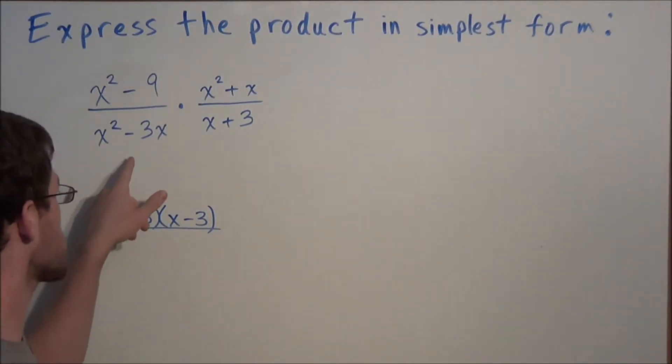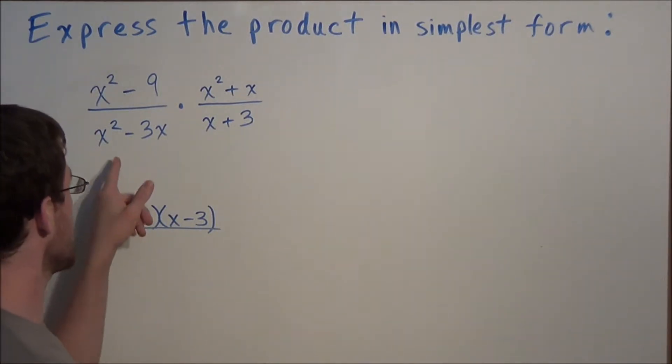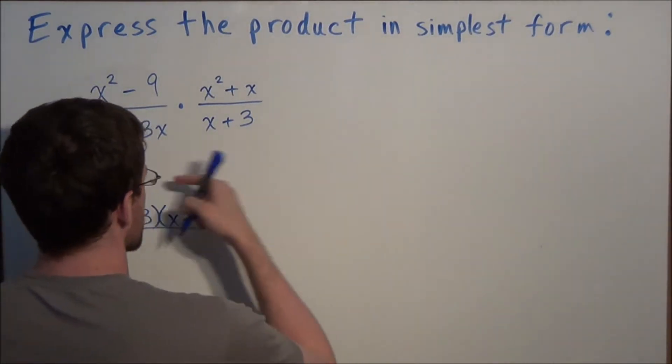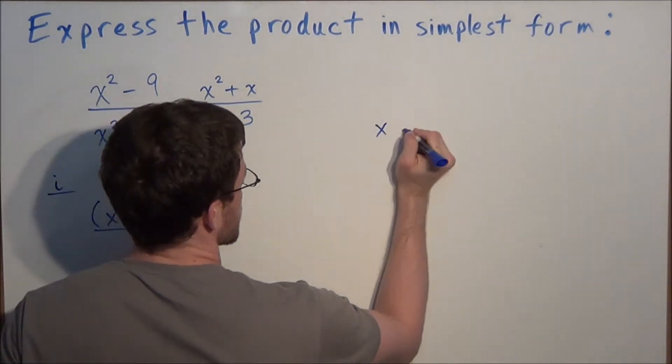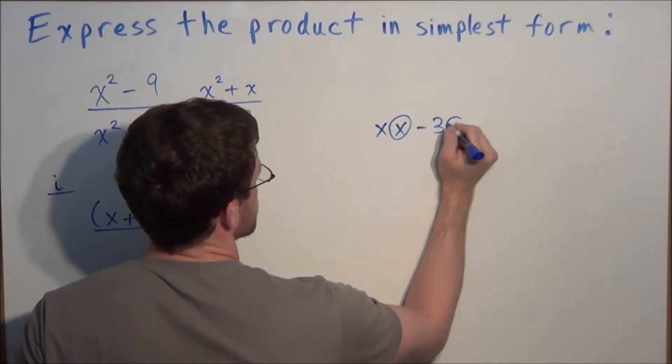Now we can target the denominator of the first fraction, x squared minus 3x. To factor this, we're going to utilize greatest common factor. One way to visualize this: x squared minus 3x can be thought of as x times x minus 3x.